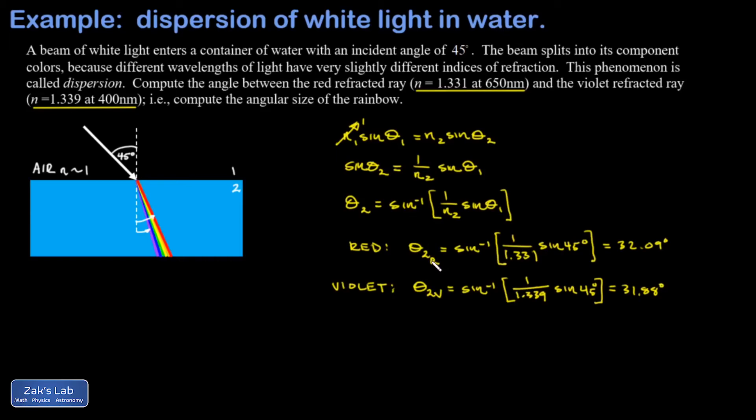Now we just get the difference in the angles and we have the angular size of this rainbow. When I take the difference and round it to the hundredths place, that's 0.21 degrees and that's it